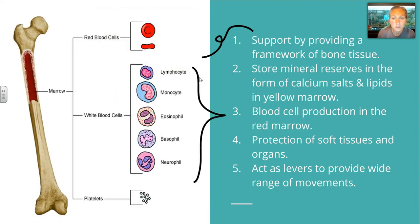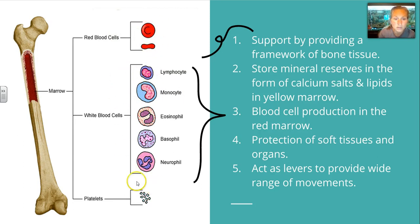For blood cell production, our blood is made up of three components: our red blood cells, a wide range of white blood cells, and your smaller platelets, which perform clotting functions.